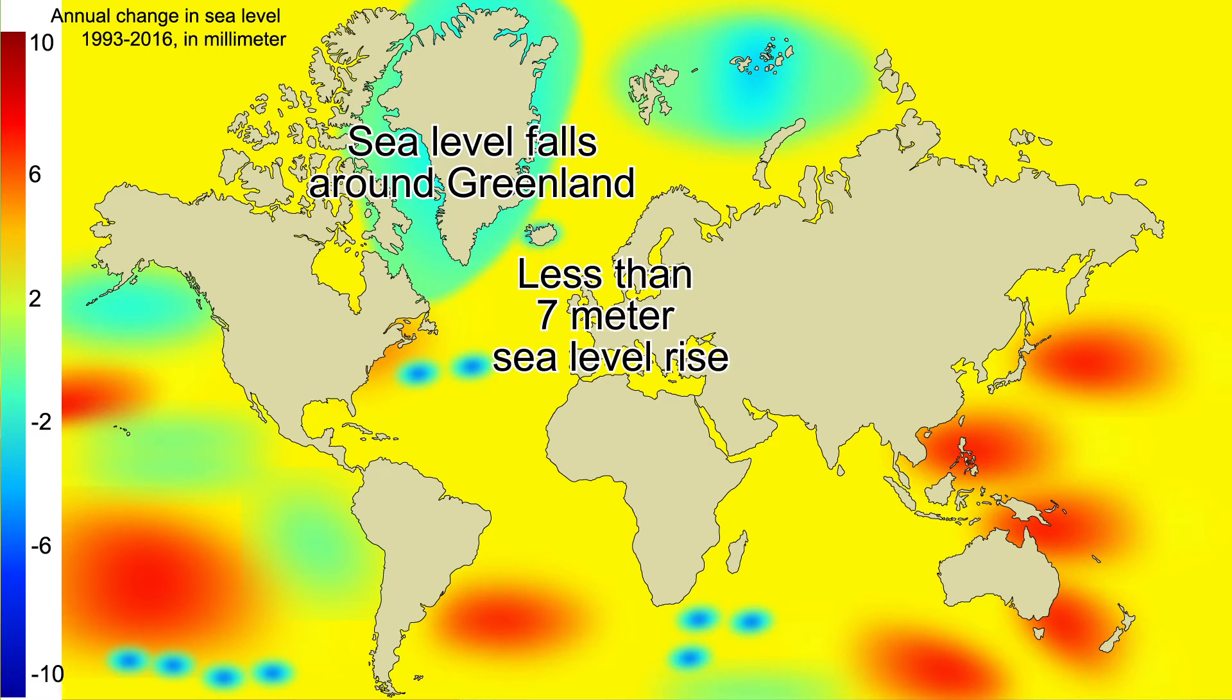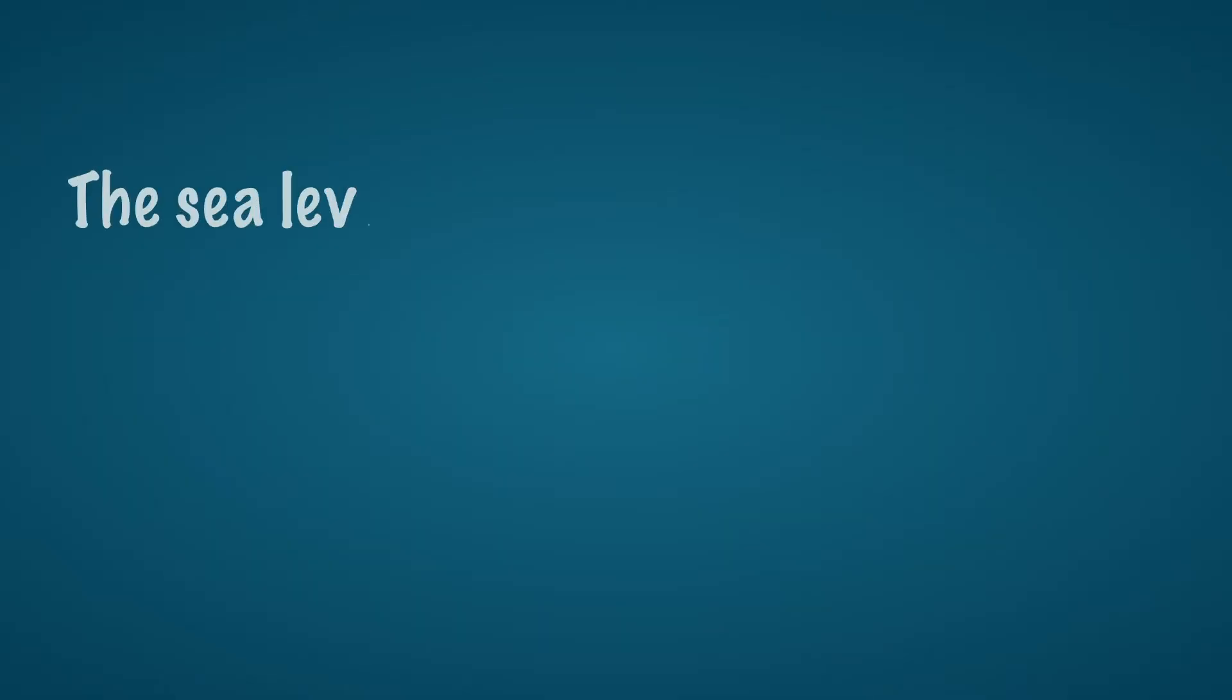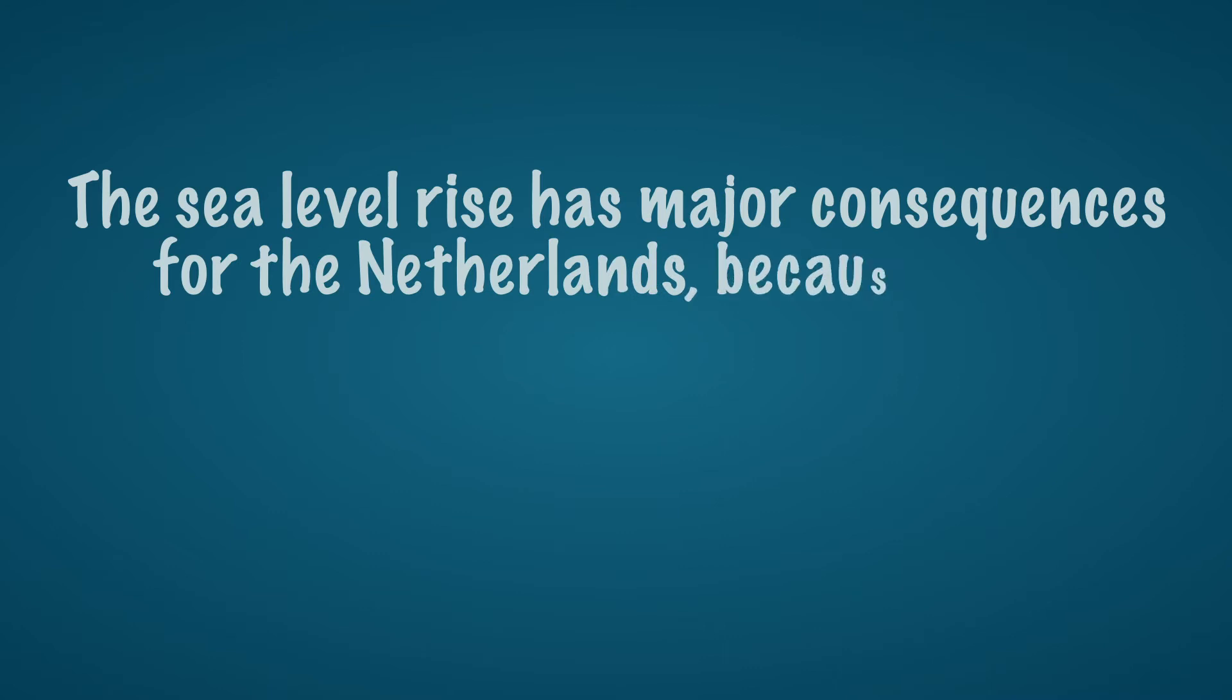The sea level rise has major consequences for the Netherlands. The Netherlands is very low and parts of the Netherlands are already below sea level. Moreover, the soil in the Netherlands is also sinking. That has two causes.